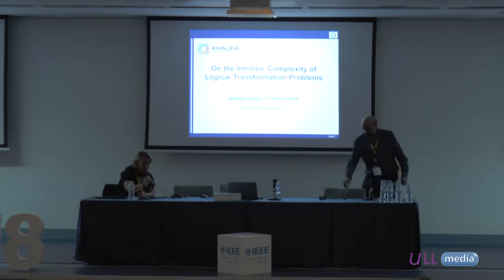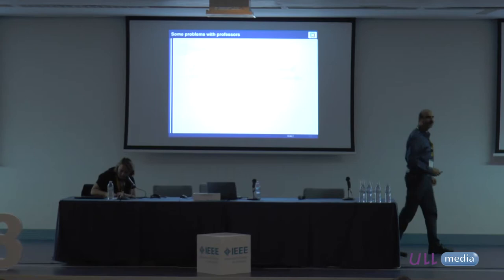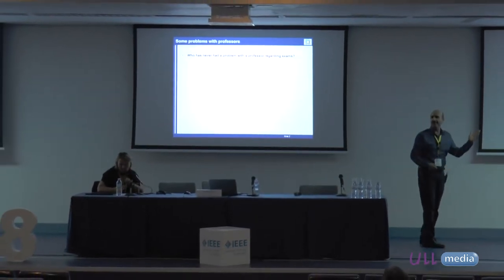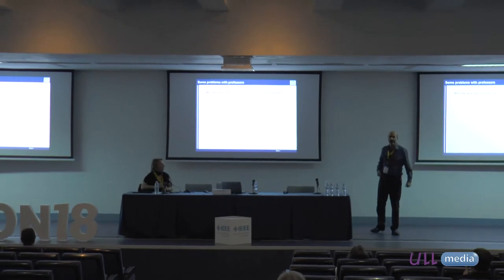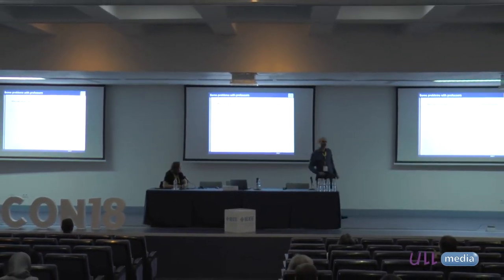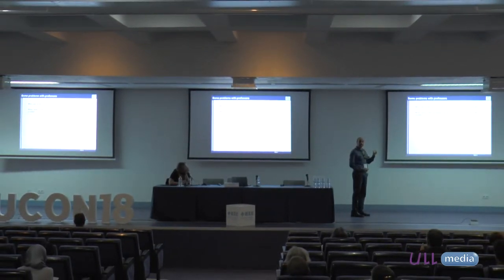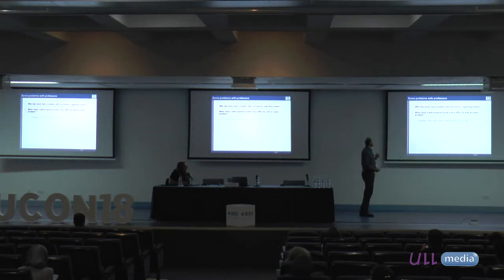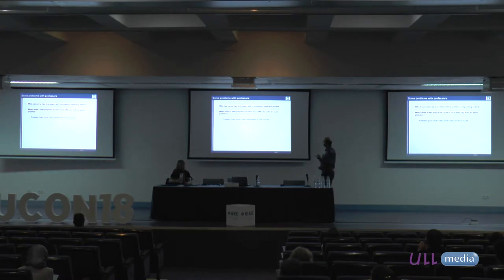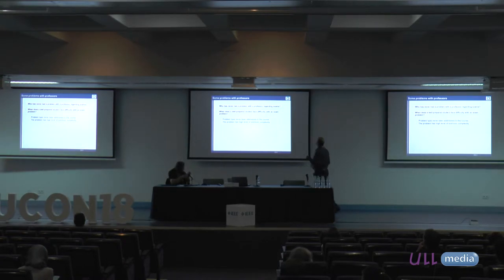Let me continue and ask you a question — perhaps you are the wrong audience, you should ask this to students. We all have some problems with exams and sometimes we blame the professors. So if a student has prepared very well, this doesn't exclude that they can still have difficulties in exams. Where does this come from? I have at least three reasons: the problem type could be very strange to the student because it was not addressed in class, or the problem has a high level of extrinsic complexity, or a high level of intrinsic complexity.